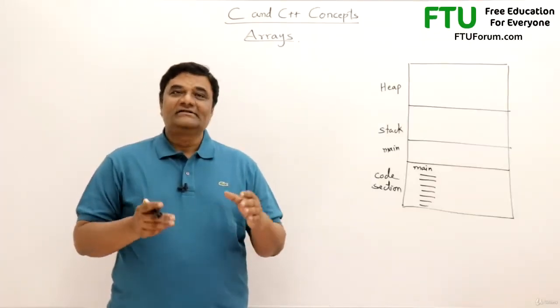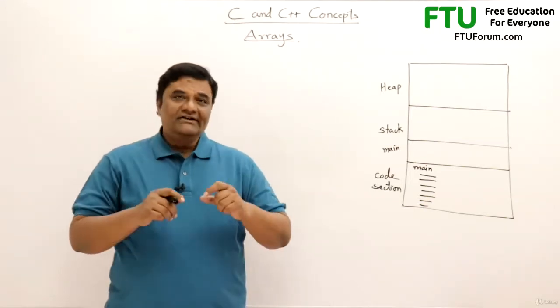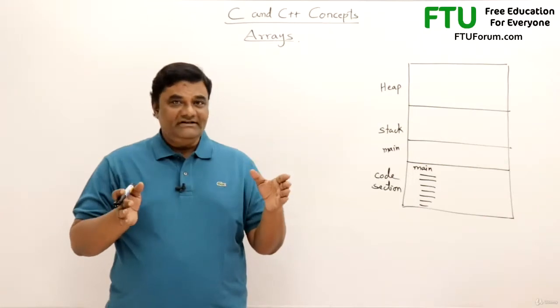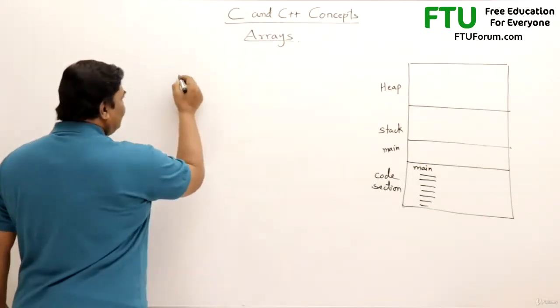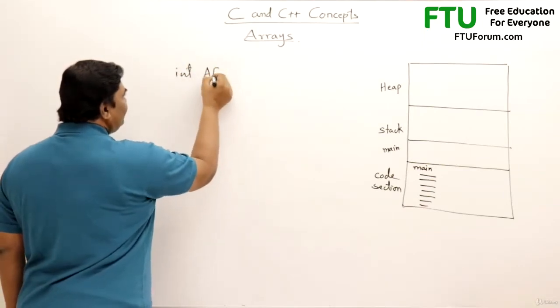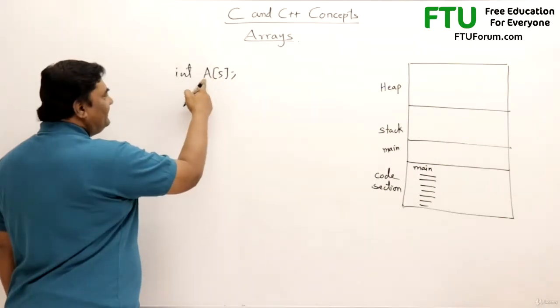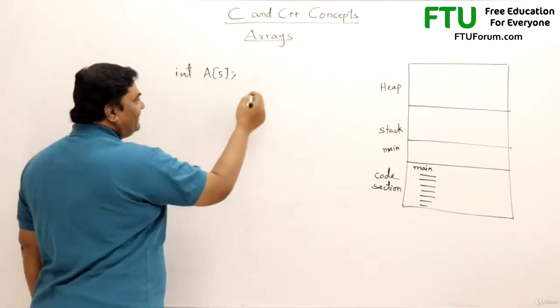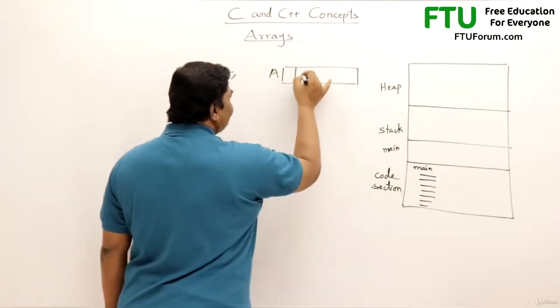Arrays is defined as collection of similar data elements. If you have some set of integers or set of floats you can group them under one name as an array. The method of declaring an array is, if you want an integer type array, let us say int A[5], then you get 5 integers. Array name is A and all those integers you can access them with name A. So this is an array and we get 5 integer spaces.